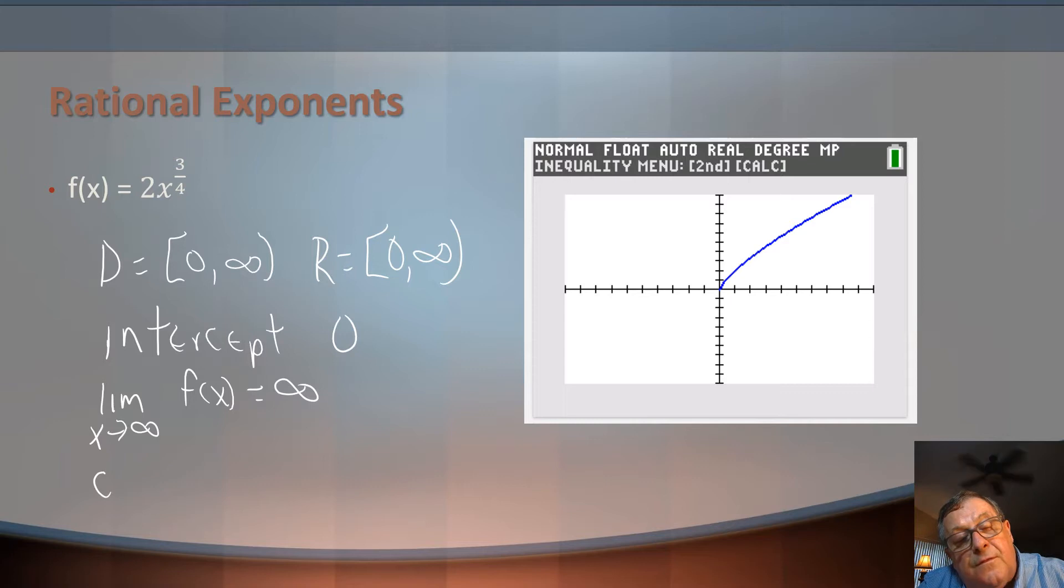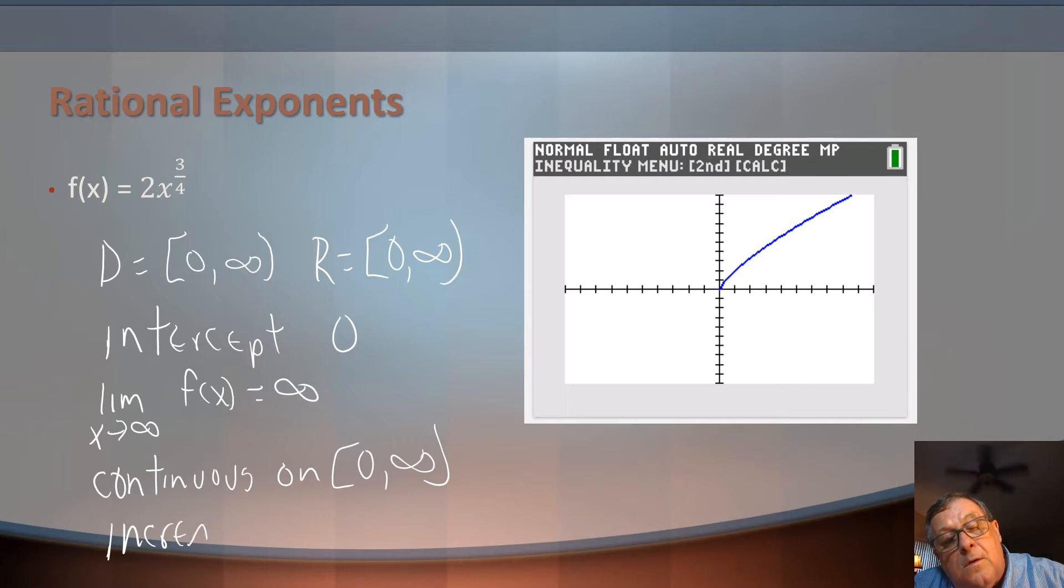It's continuous from where it starts out to infinity, but it starts there at 0. So it's continuous on 0, including 0, out to infinity. And it is increasing. No decreasing in this thing. It is increasing from 0 to infinity.